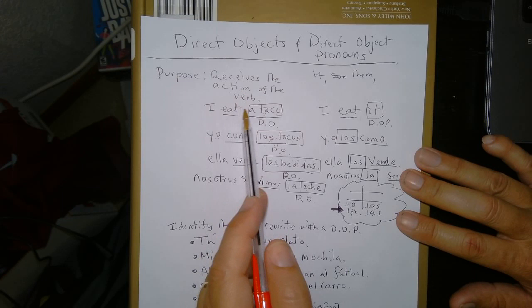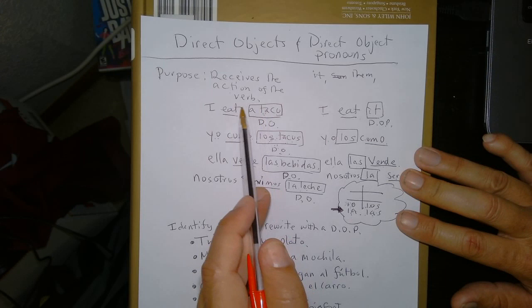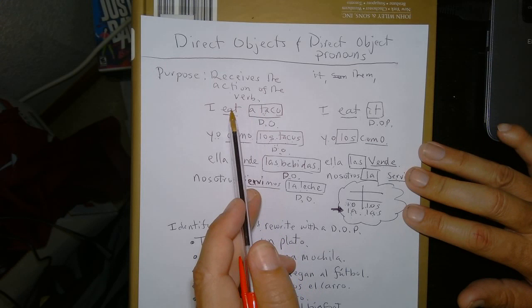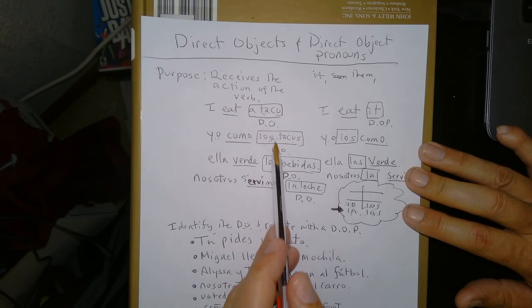So just a quick review, the purpose of a direct object is to receive the action of the verb. What's being eaten in this case? A taco is receiving that action. It's what's being eaten. So you can always ask yourself that question. What's being eaten? What's being sold? What's being served? If you can answer it, you know you have a direct object.